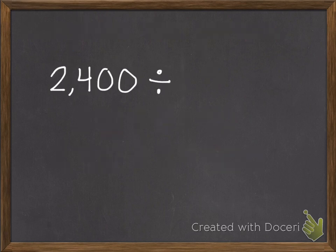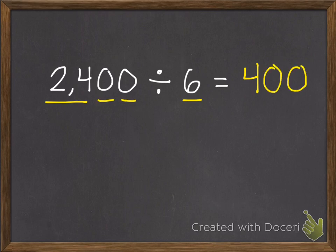Here's my second example. 2,400 divided by 6. So I can start with 24 divided by 6. If I don't know that, I can use multiplication. What times 6 equals 24? The answer is 4. How many 0s do I have? I have 2, so the answer is 400.